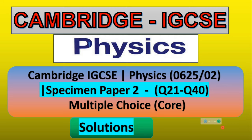Hello to all. In this video we will solve specimen paper 2, paper code 0625, which is Cambridge IGCSE. Questions 1 to 20 have been uploaded already, and in this video we will solve questions 21 to 40.